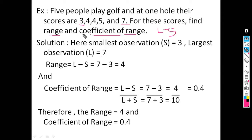The second part asks us to find the coefficient of range. The formula for coefficient of range is (L minus S) divided by (L plus S). Substituting: (7 minus 3) divided by (7 plus 3) equals 4 divided by 10, which equals 0.4.